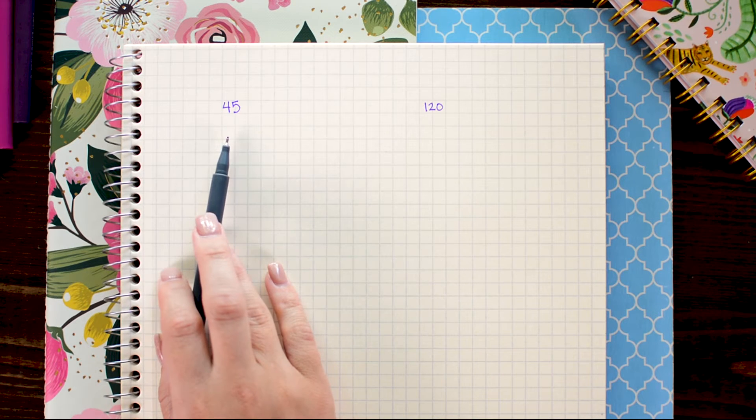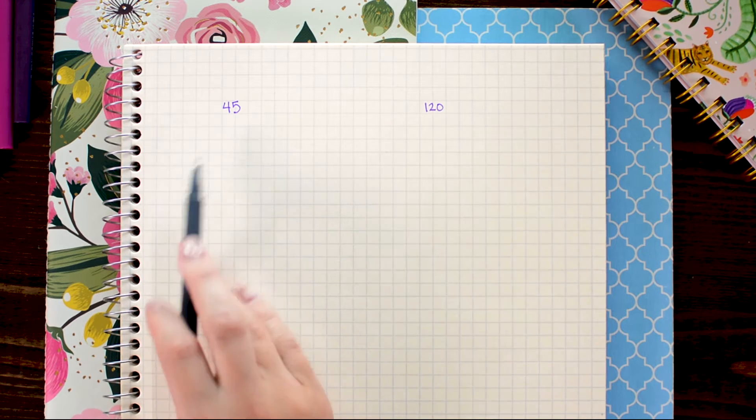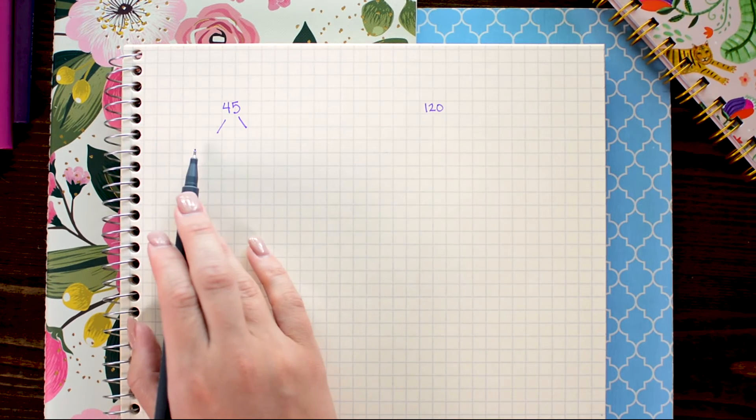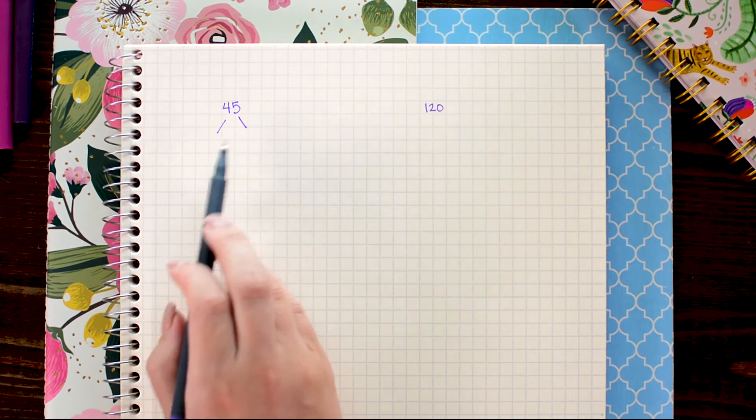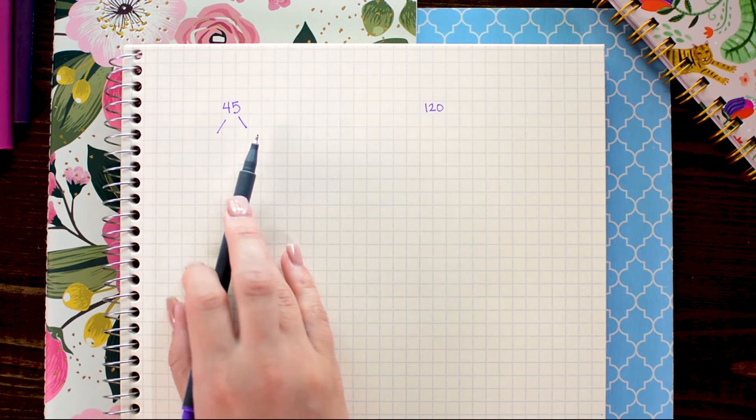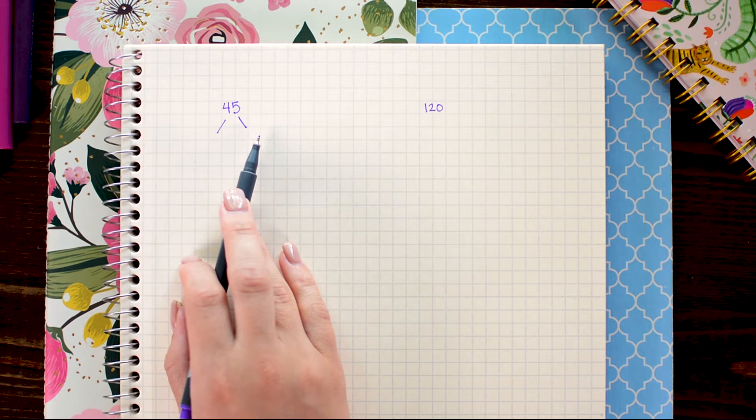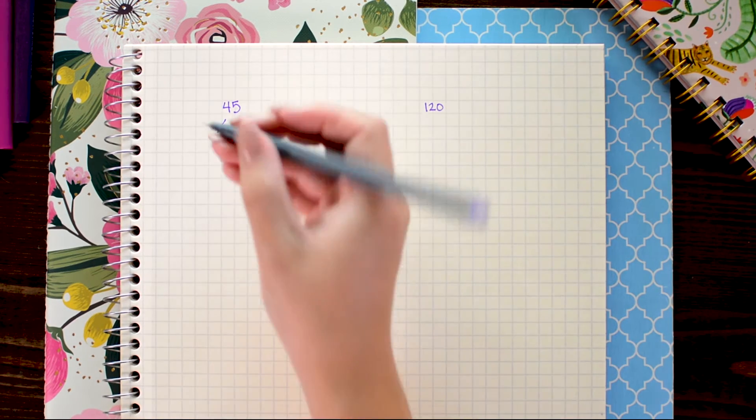For 45 I want to start my tree by drawing two branches and here I'm just gonna write two numbers that multiply to 45 and they can be any numbers that come to mind. For me the first numbers that multiply to 45 that I can think of are 9 times 5.